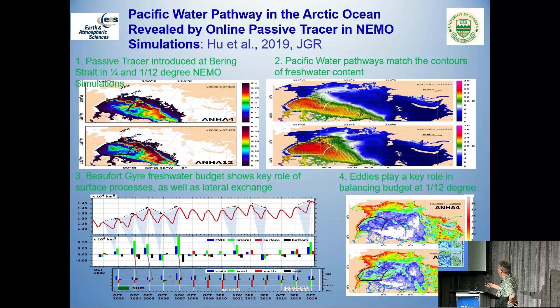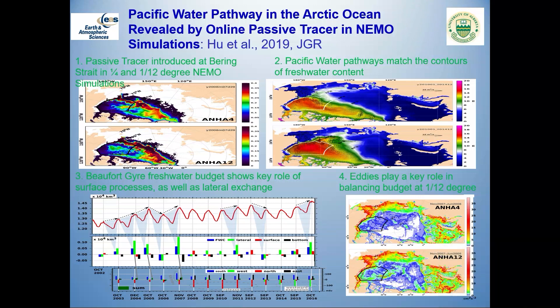Their structure changes very much as the accumulation with time varies greatly due to the eddies. This plot shows the eddy kinetic energy at 1/12th versus the quarter degree, and you can see a tremendous increase in the eddy kinetic energy that brings a lot of water both directly in, but also coming around from the transpolar drift back into the Beaufort Gyre before it flows southward.